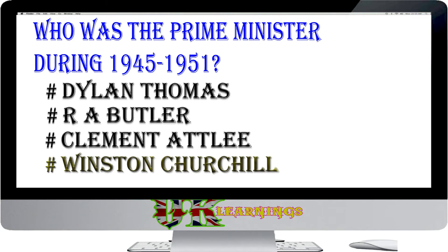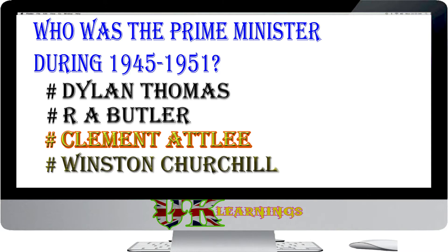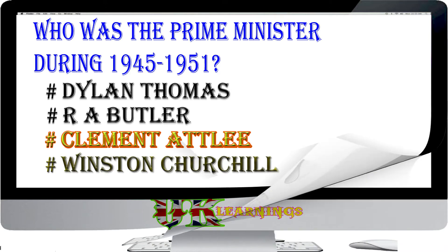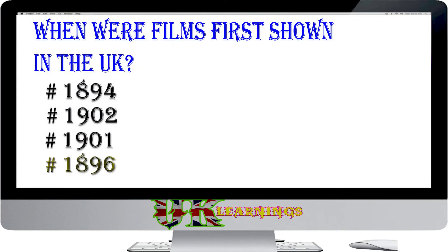Who was the Prime Minister during 1945 to 1951? Options: Dylan Thomas; R. A. Butler; Clement Attlee; Winston Churchill. The answer is Clement Attlee. Clement Attlee was born in London in 1883. He was Prime Minister from 1945 to 1951 and led the Labour Party for 20 years.